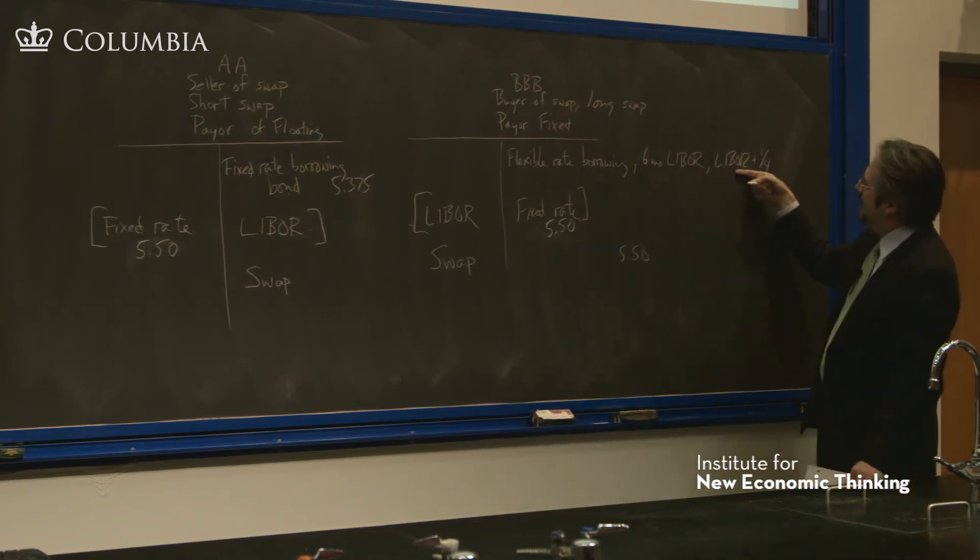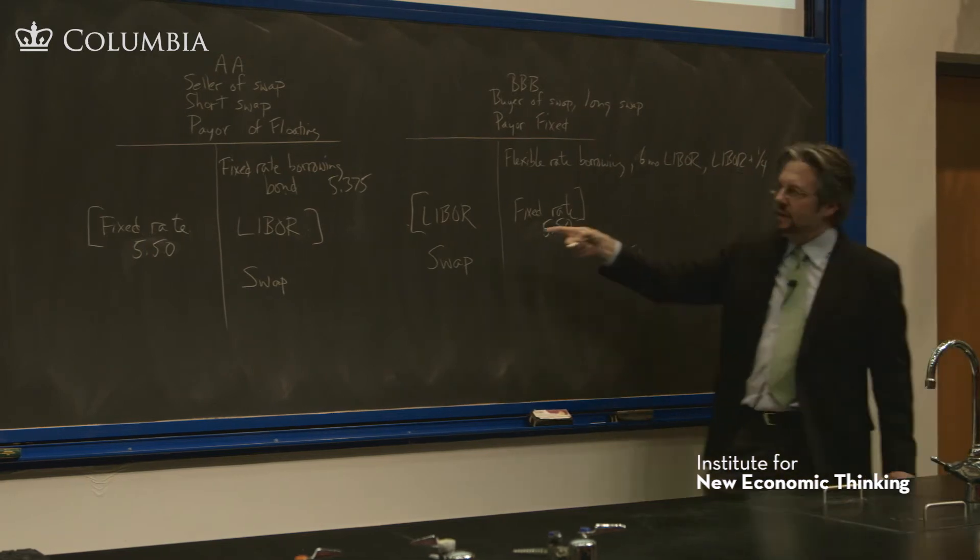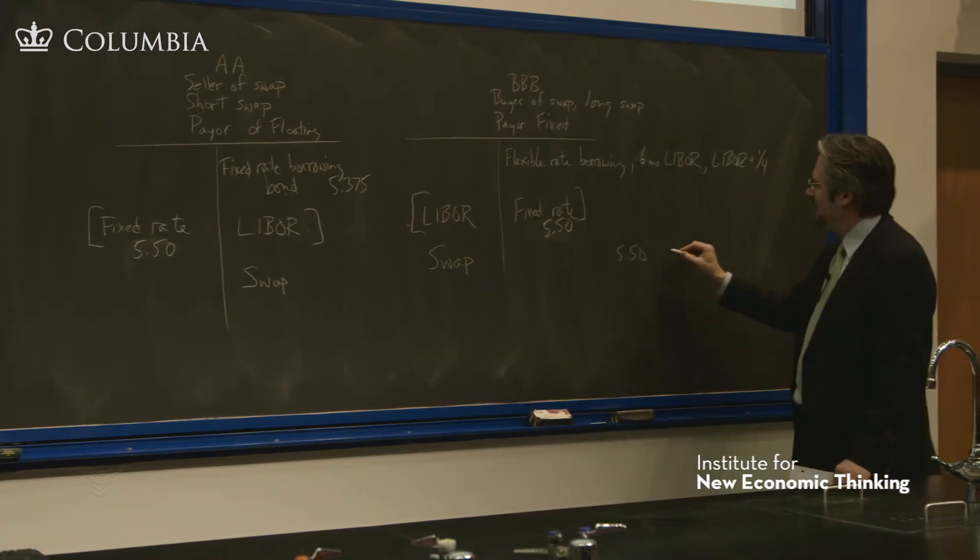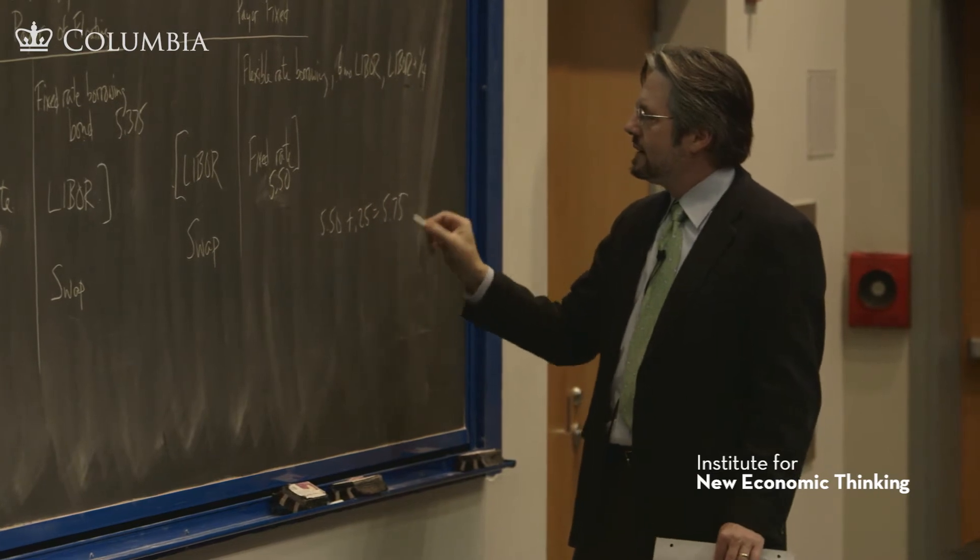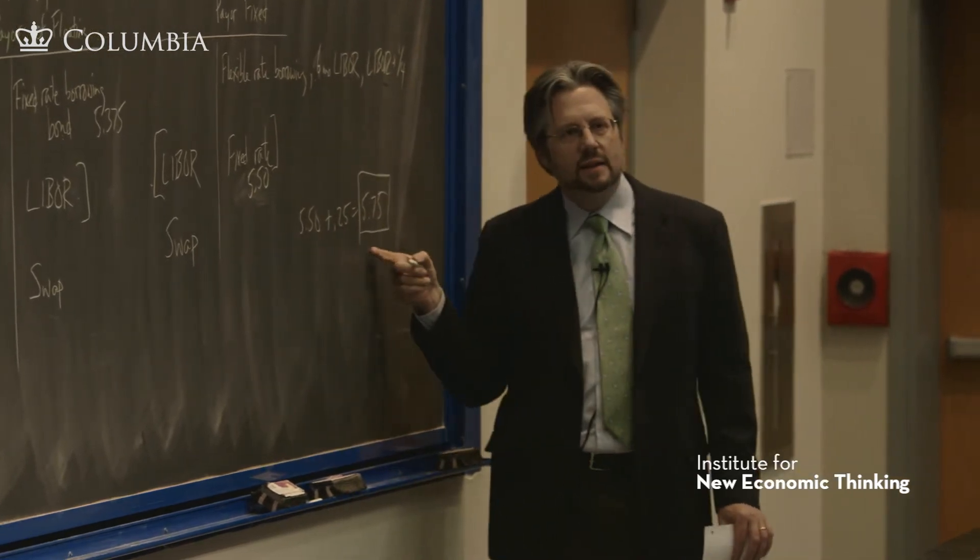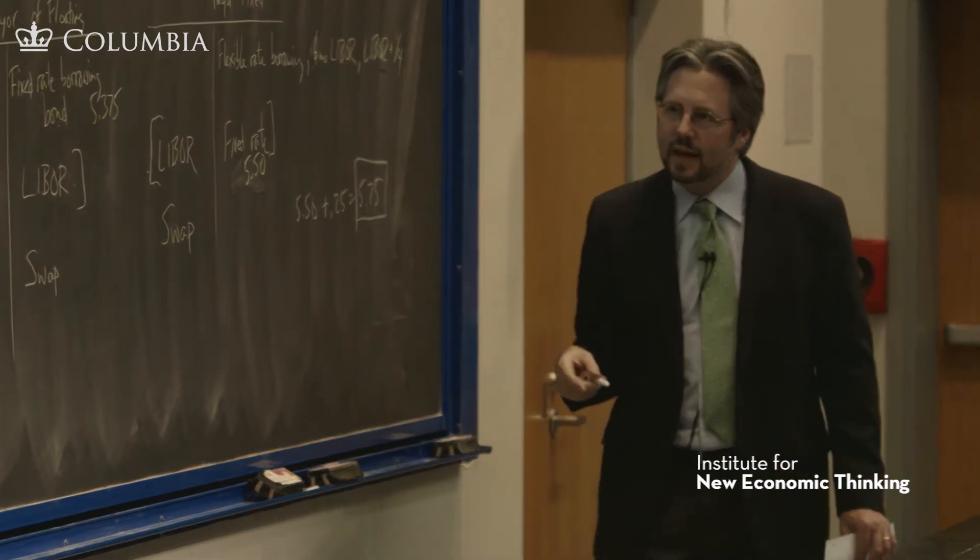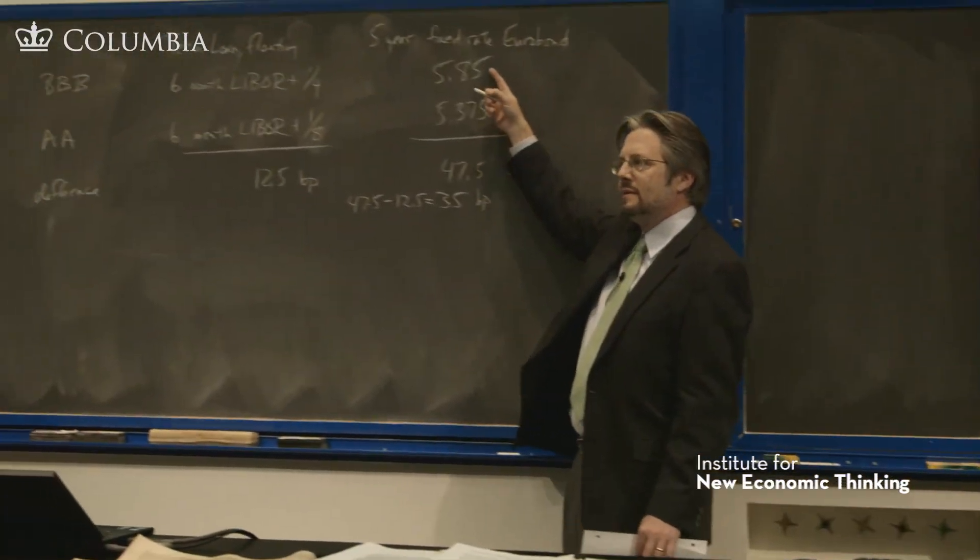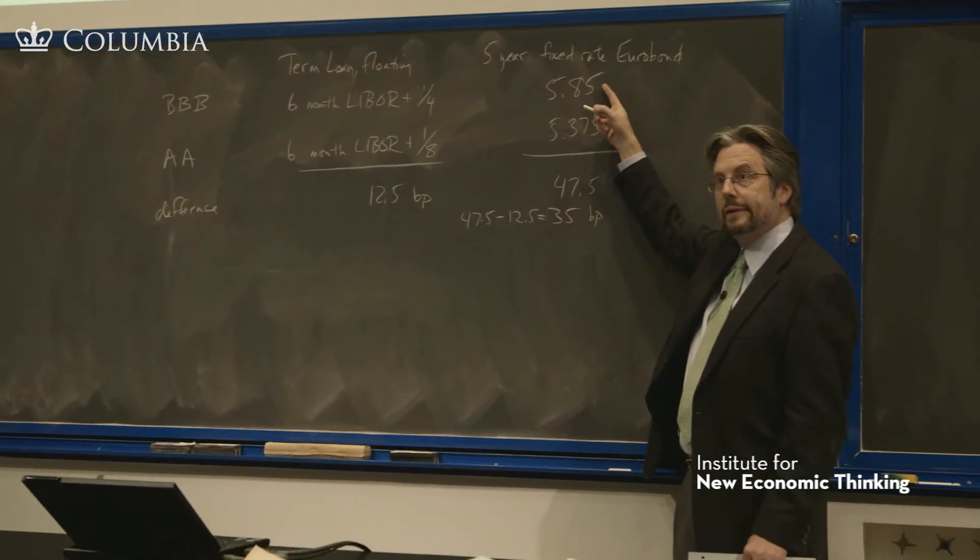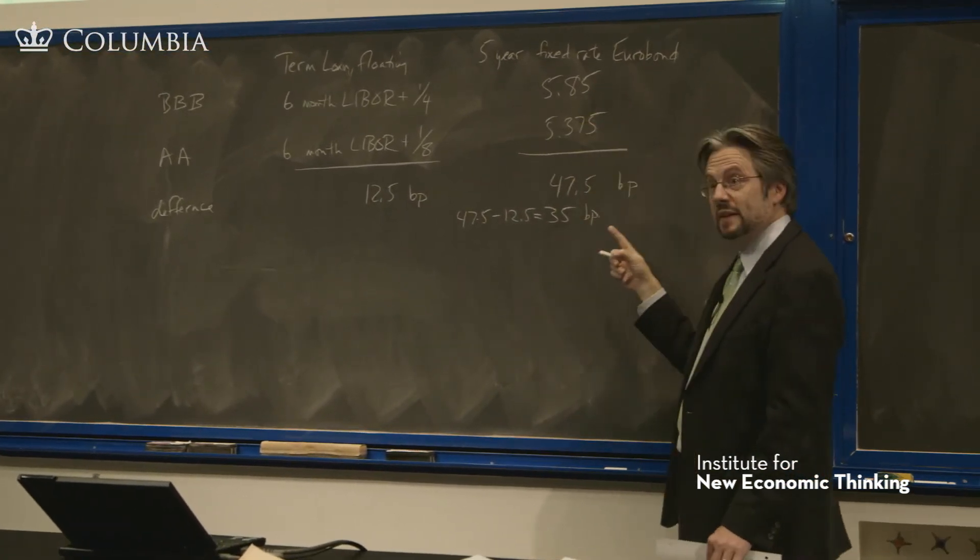These don't net out. LIBOR plus a quarter and here's LIBOR, so they're paying plus a quarter. They're paying a rate of 5.75%. They've locked in fixed rate funding of 5.75%, which is 10 basis points less than they could do on their own. So they got 10 of those basis points.